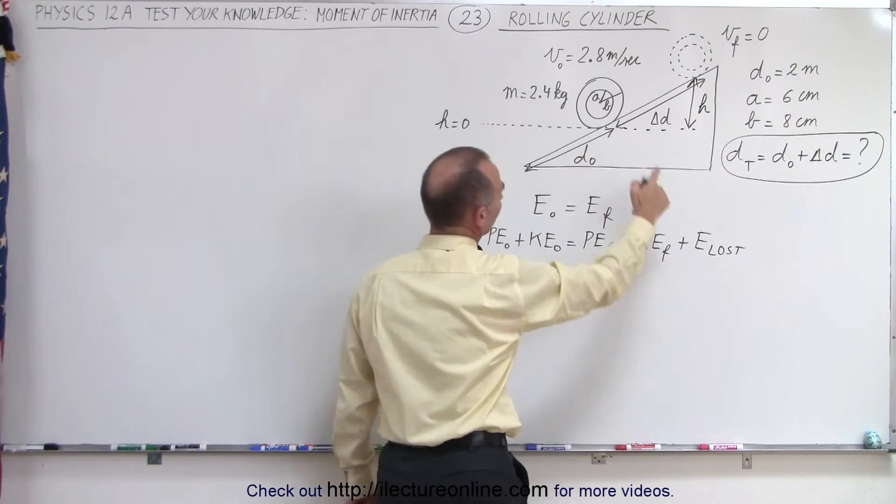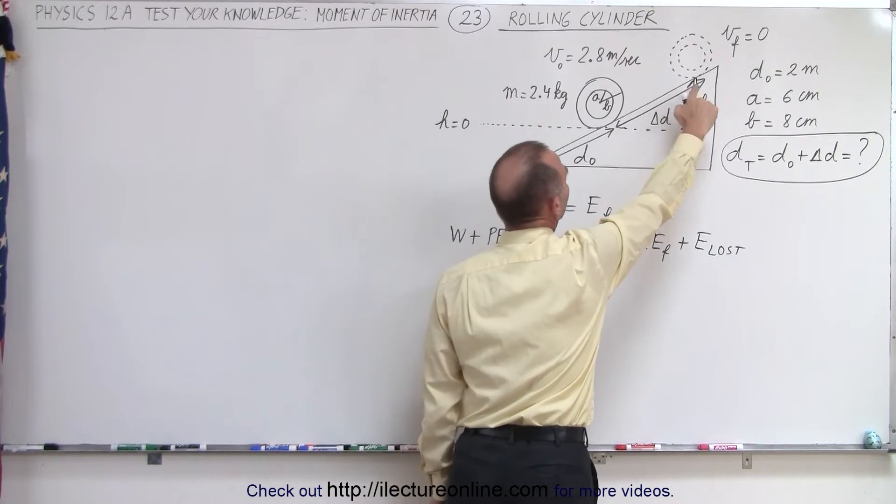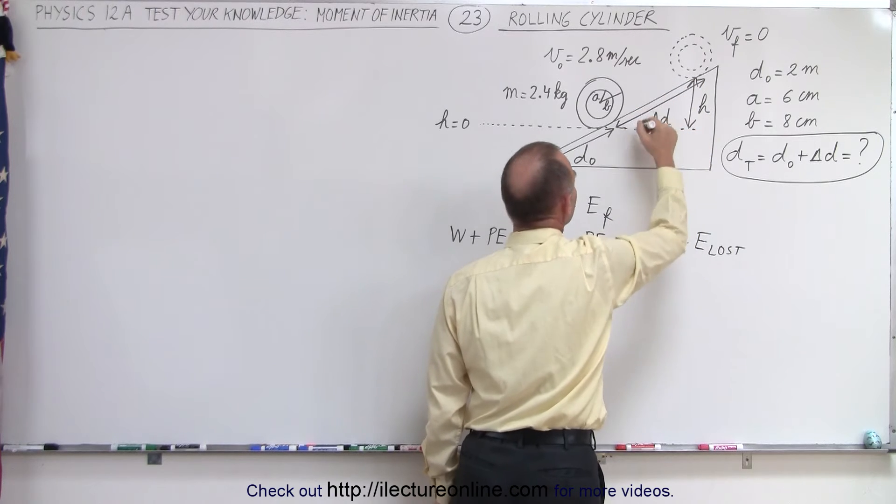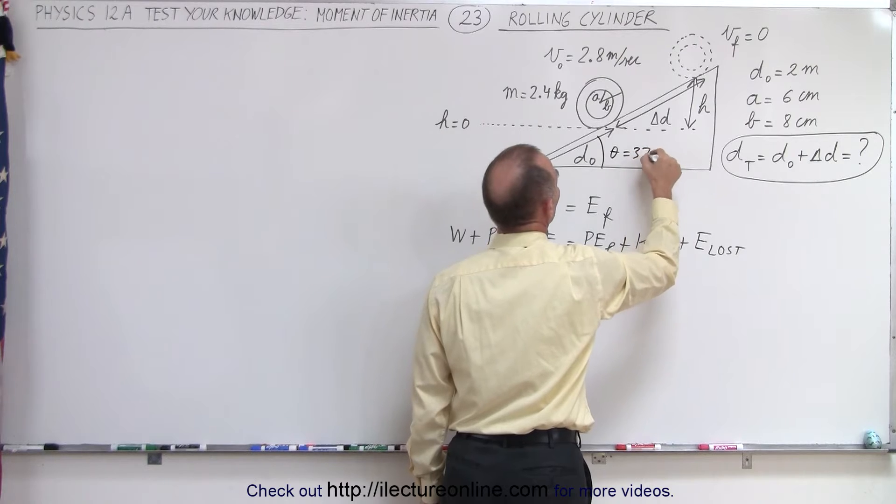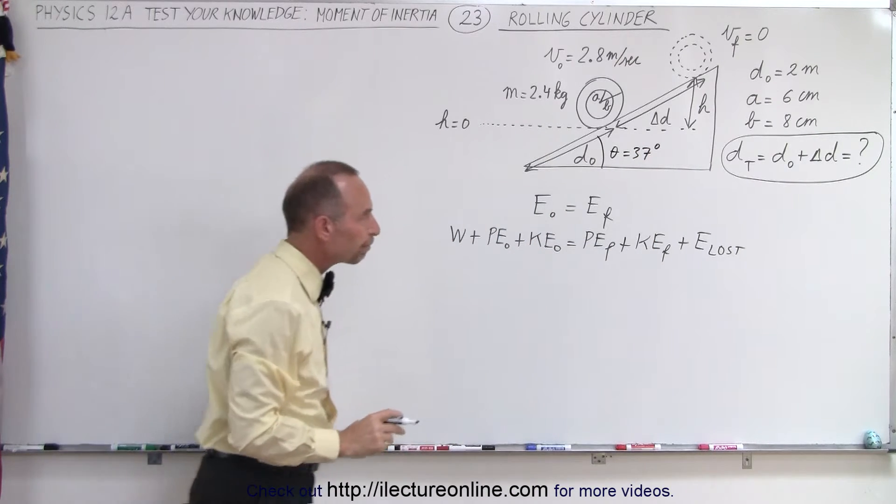If we do that, then we can see that this is the additional height gained by the cylinder. So we'll call that h. And then, of course, we need a relationship between delta d of the incline h and the angle. Well, I forgot my angle here, but angle theta is equal to 37 degrees.